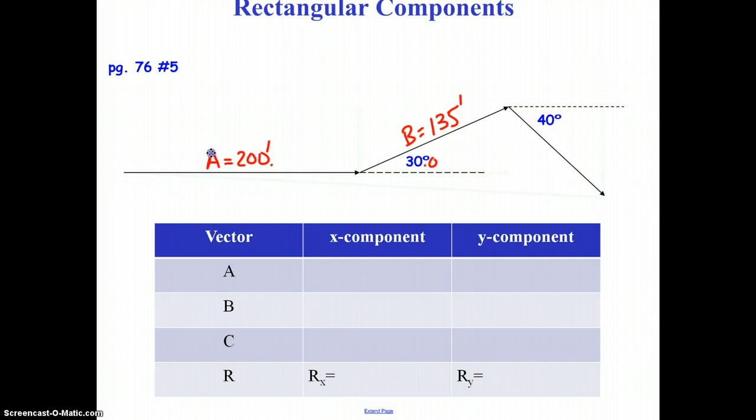Our third vector, we're going to call vector C, also 135 feet, and it is 40.0 degrees below the horizontal from the end of vector B. We're using this labeling system because we're going to develop a chart to keep our information organized. In the method of rectangular components, you take each vector and break it into its x and y components.